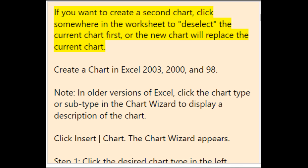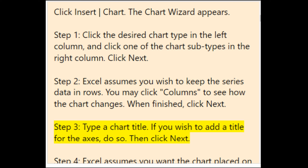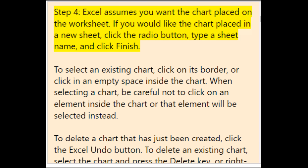If you want to create a second chart, click somewhere in the worksheet to deselect the current chart first, or the new chart will replace it. In Excel 2003, 2000, and 98, click Insert Chart — the Chart Wizard appears. Step 1: click the desired chart type in the left column and a subtype in the right column. Step 2: Excel assumes series data in rows; you may click columns to see how the chart changes. Step 3: type a chart title and axis titles if desired.